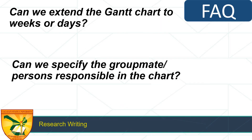Now for frequently asked questions about preparing your Gantt chart. Number one: can we extend the Gantt chart to weeks or days? Yes. In my case, when a funding agency asks for the Gantt chart, I write it in months. But for my own use, I write it in weeks so I can strictly check if I'm on schedule. For days, I don't really recommend it because we don't control others' schedules, and you'll have to erase and rewrite frequently. So I suggest weeks or months.